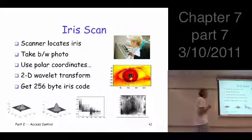The bottom line is you end up here with a 256-byte iris code, so that's how many bits? A lot, that's a lot of bits. 2,048 bits, so that's good because it gives us a lot to compare.